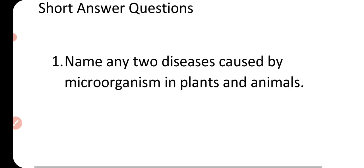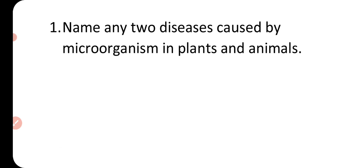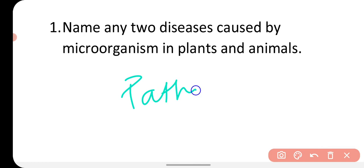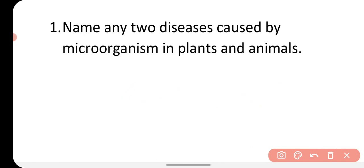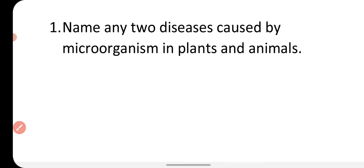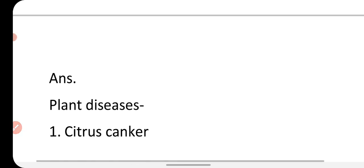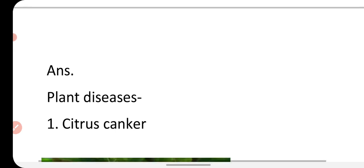The first question is: name any two diseases caused by microorganisms in plants and animals. You have to answer the names of diseases occurring in plants and animals caused by microorganisms. Disease-causing microorganisms are called pathogens, and pathogens can cause diseases in plants as well as in animals and in human beings also.